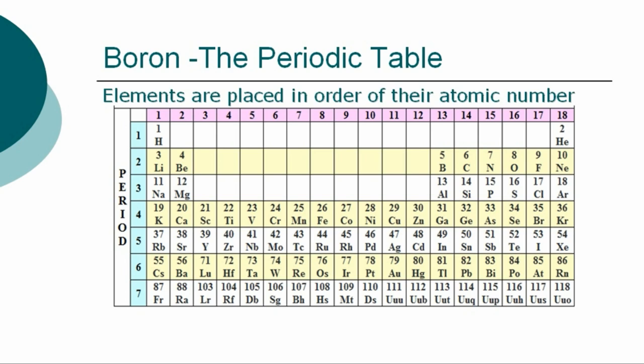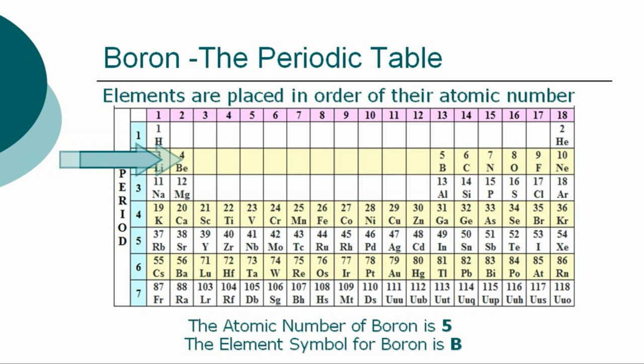The chemical elements of the periodic table are placed in order of their atomic numbers. Atomic numbers increase as you move across a row, called a group, or down a column, called a period. The atomic number of boron is 5, and the element symbol for boron is B.